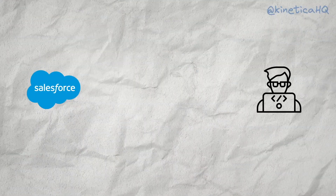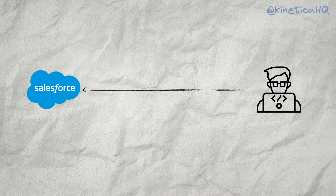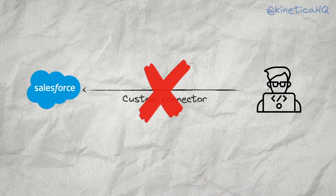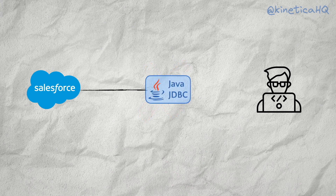JDBC stands for Java Database Connectivity. It is a standardized API for interacting with databases using Java programs. With JDBC, developers don't have to worry about building custom connectors for interacting with a new database. Instead, you can use JDBC as a middle layer that provides a standardized interface to connect, issue queries, and handle results from a database. The only requirement is that the application or database that you're connecting to has a JDBC driver.